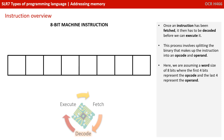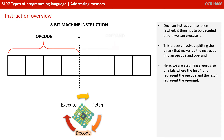Once an instruction has been fetched, it then has to be decoded before we can execute it. This process involves splitting the binary that makes up the instruction into an opcode and an operand. Here we're assuming a word size of 8 bits, where the first 4 bits represent the opcode, and the last 4 represent the operand.